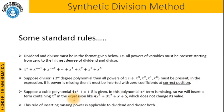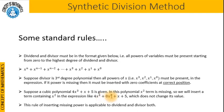Suppose a cubic polynomial 4x cubed plus x plus 5 is given. We will insert a term containing x squared to get 4x cubed plus 0x squared plus x plus 5, which does not change its value. This rule of inserting missing powers is applicable to both dividend and divisor.